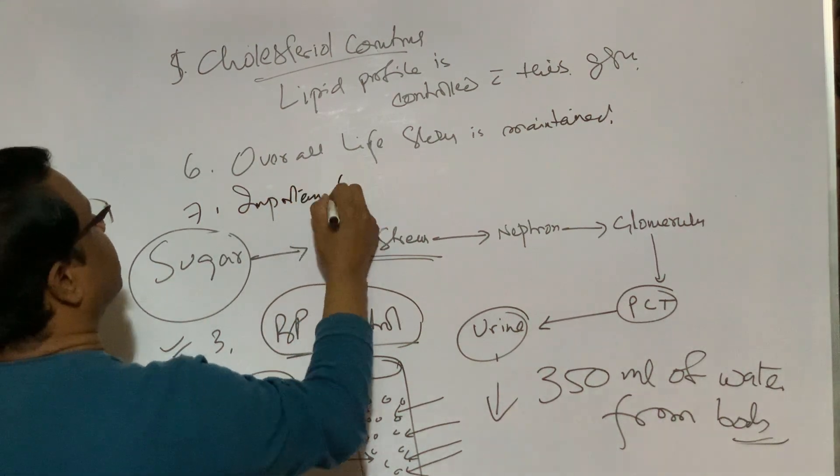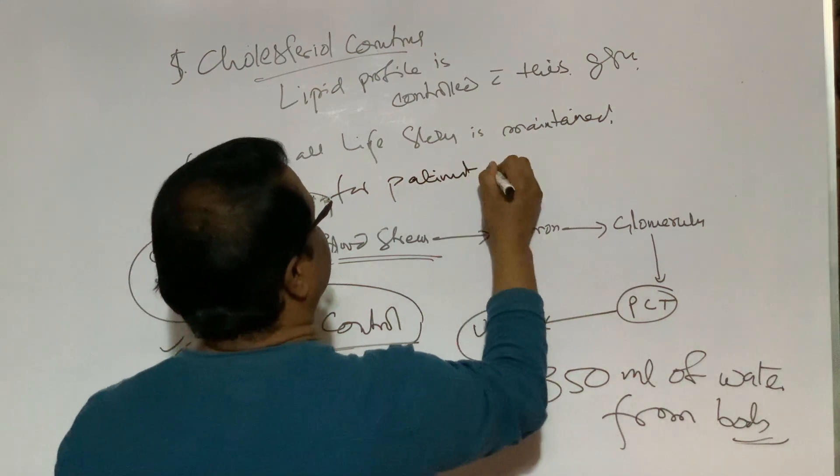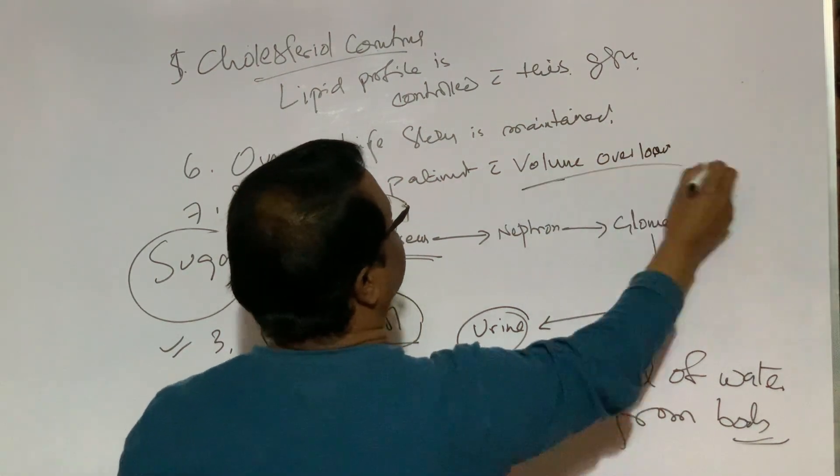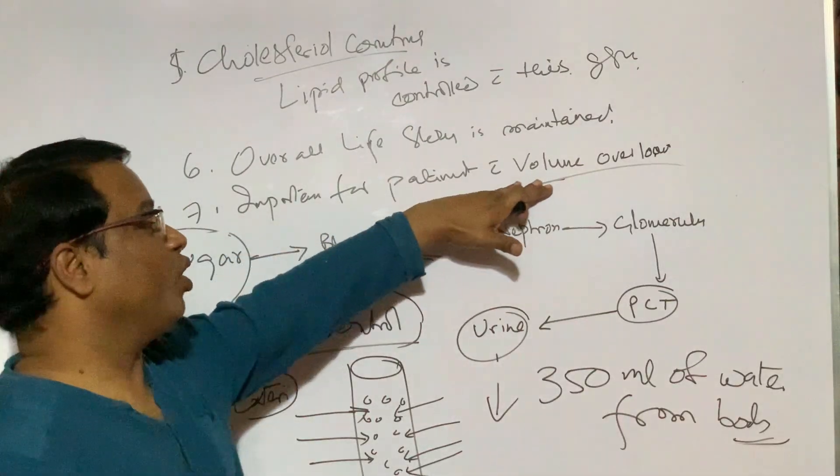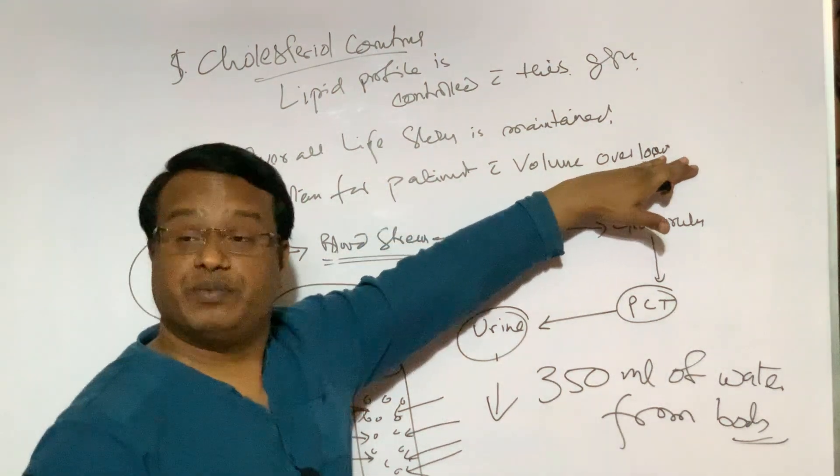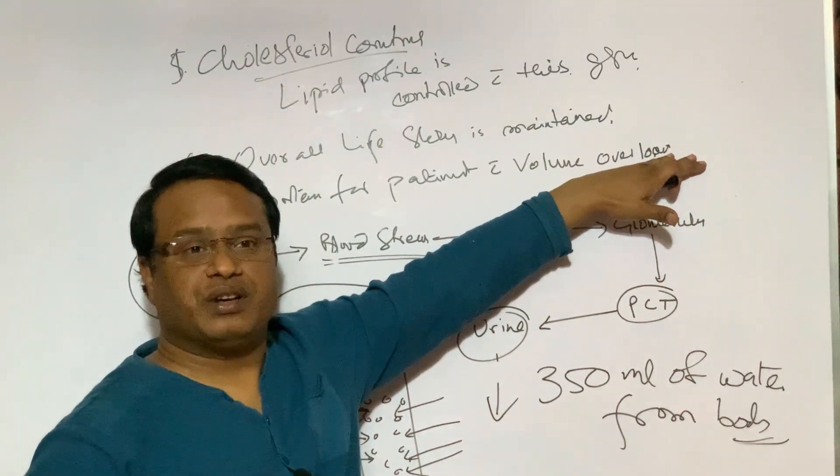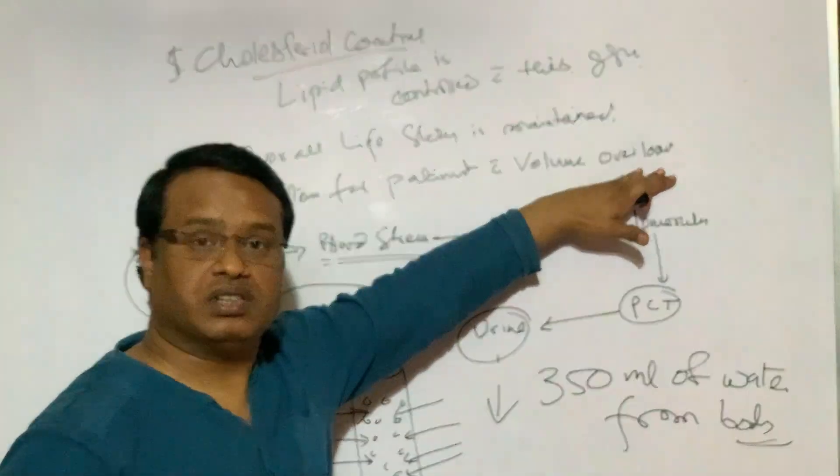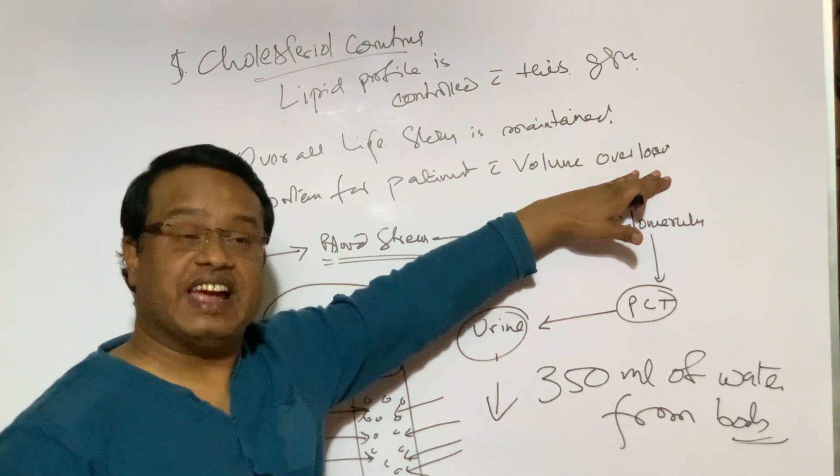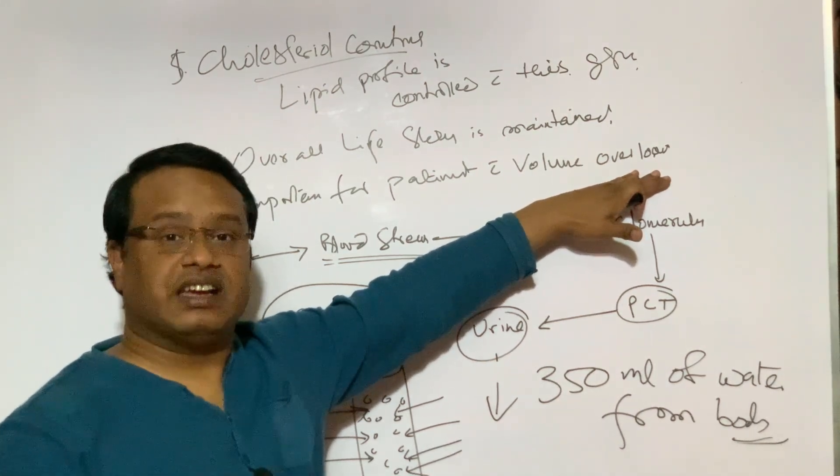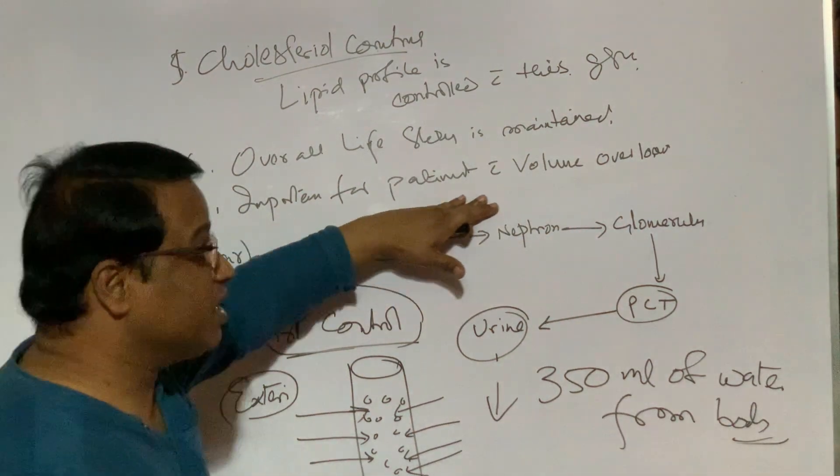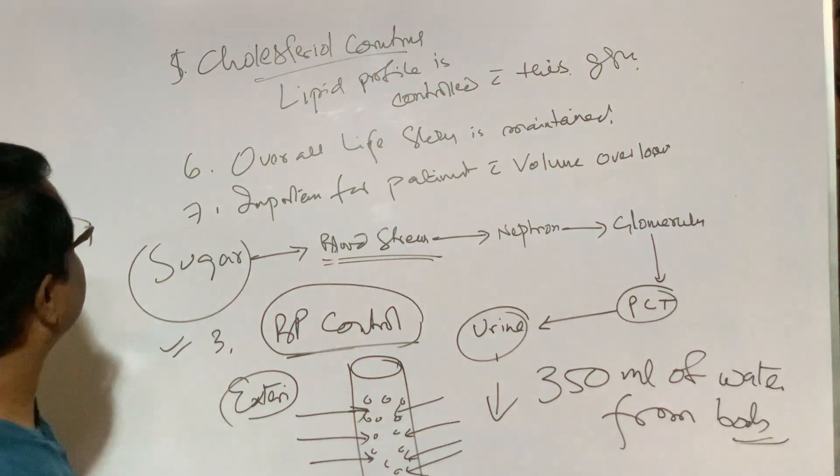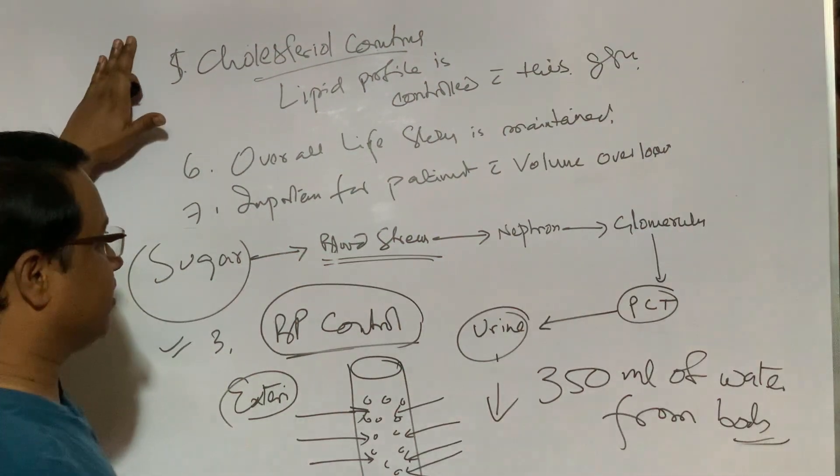Overall, lifestyle is maintained. It is important for patient with volume overload. That feature is very much vital for patients with congestive cardiac failure or whose cardiac performance is not good. In this type of patient, this medicine acts as a very good beneficiary. It benefits very much to cardiac function to the patient whose cardiac performance is compromised.